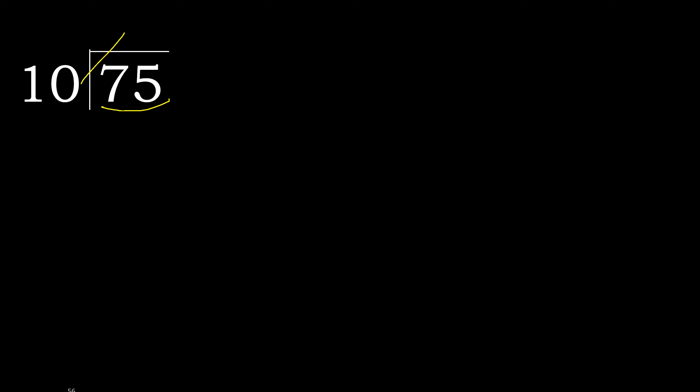Then multiply by which number is nearest to 75 but not greater. Multiply by 8 is 80 — 80 is greater. Multiply by 7 is 70 — 70 is not greater. So 75 minus 70 is 5.